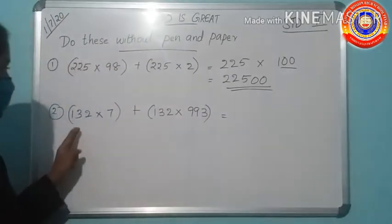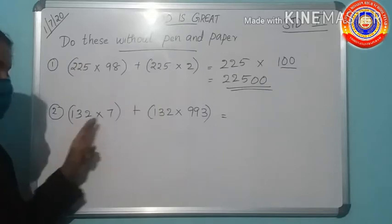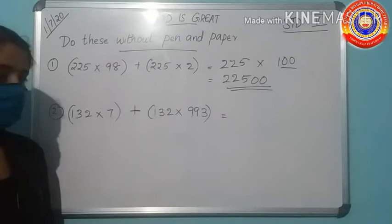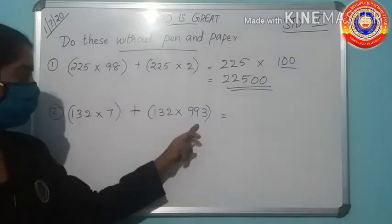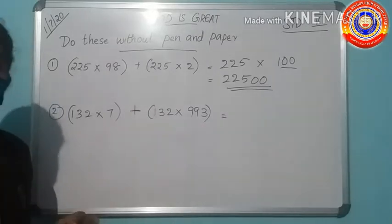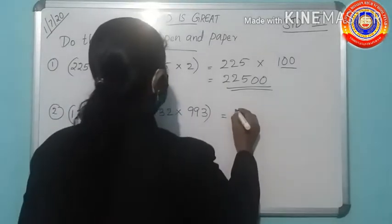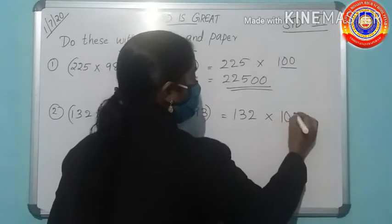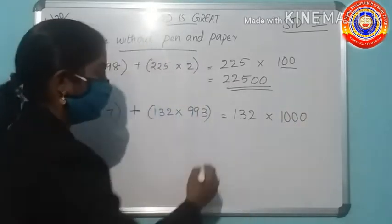The next question: 132 into 7 plus 132 into 993. Which number is common here? Yes, it is 132. The number which is not common? 7 plus 993.